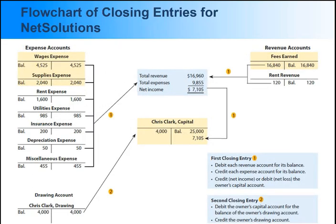Debit fees earned for $16,840 and rent revenue for $120. Credit all the expenses, which amounts to $9,855. The difference of $7,105 is the net income and is credited to Chris Clark's capital account.